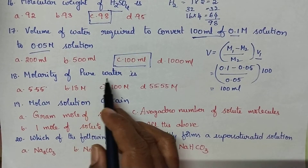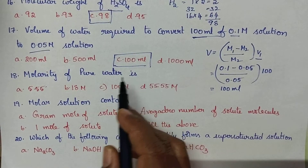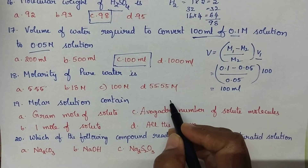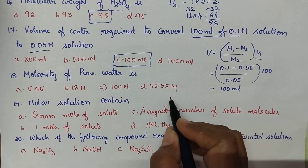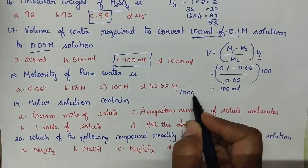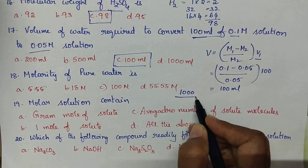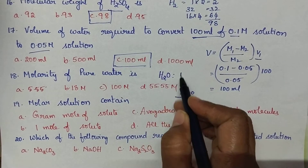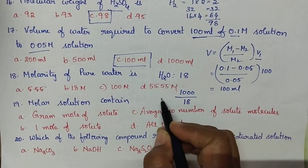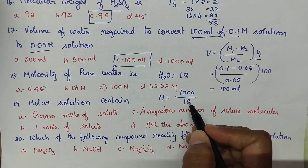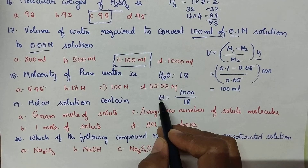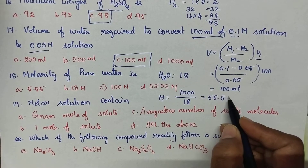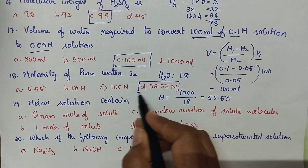Molarity of pure water: considering 1 liter of pure water, its weight is 1 kg = 1000 g. Molarity = weight / gram molecular weight = 1000 / 18 = 55.55 M. Option D is the right answer.